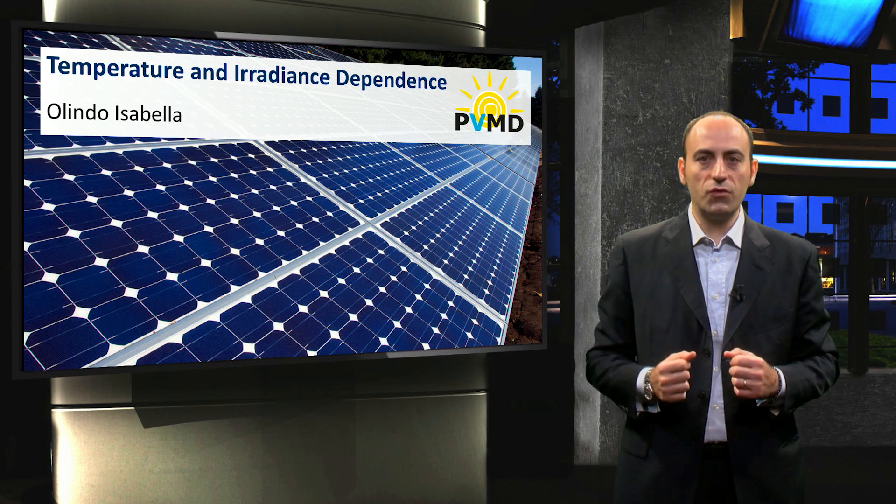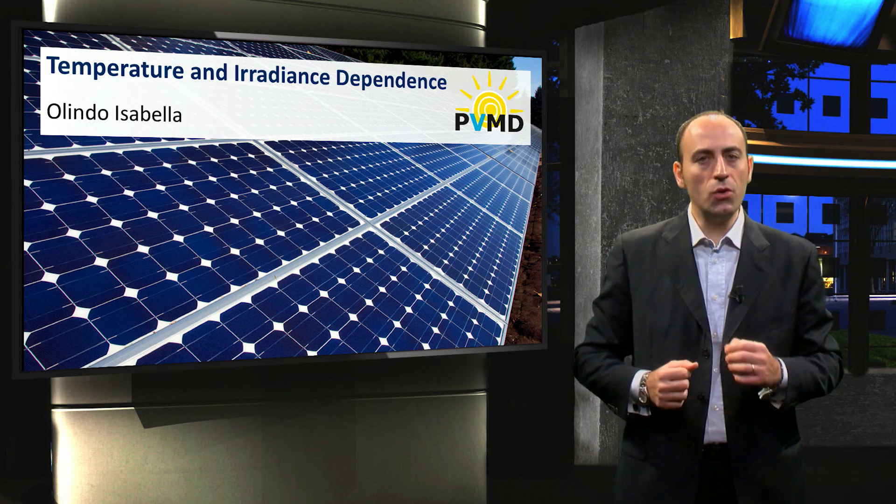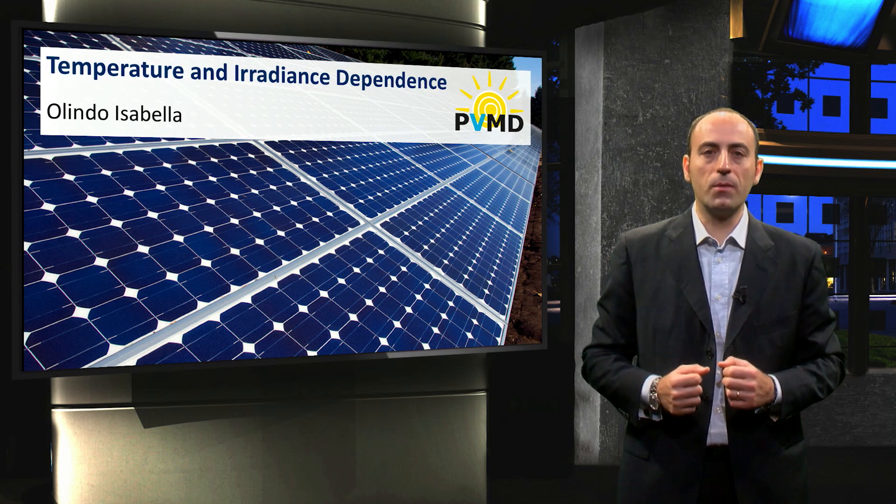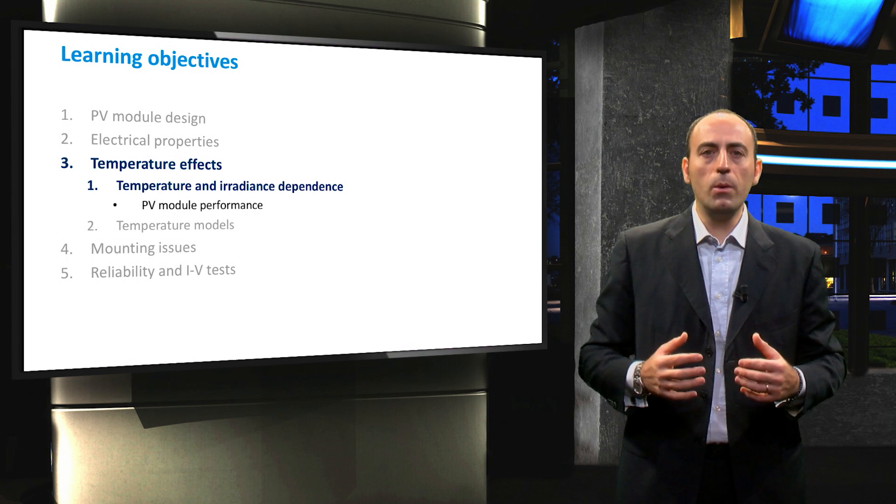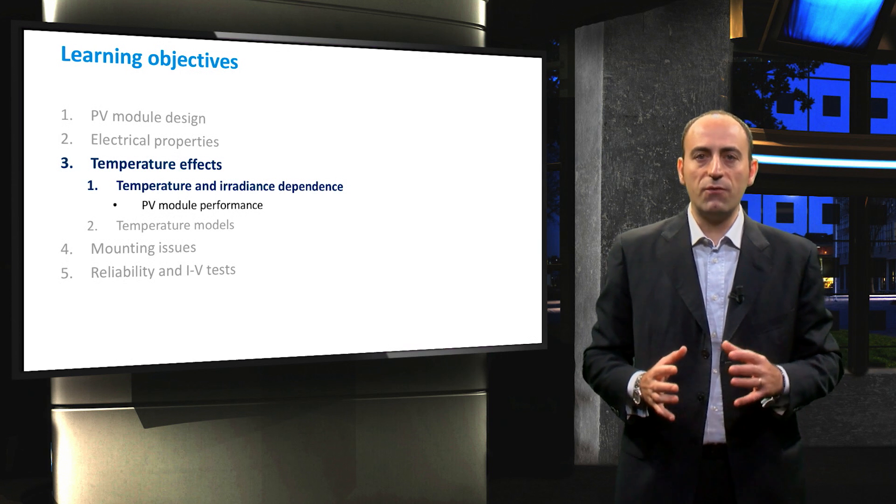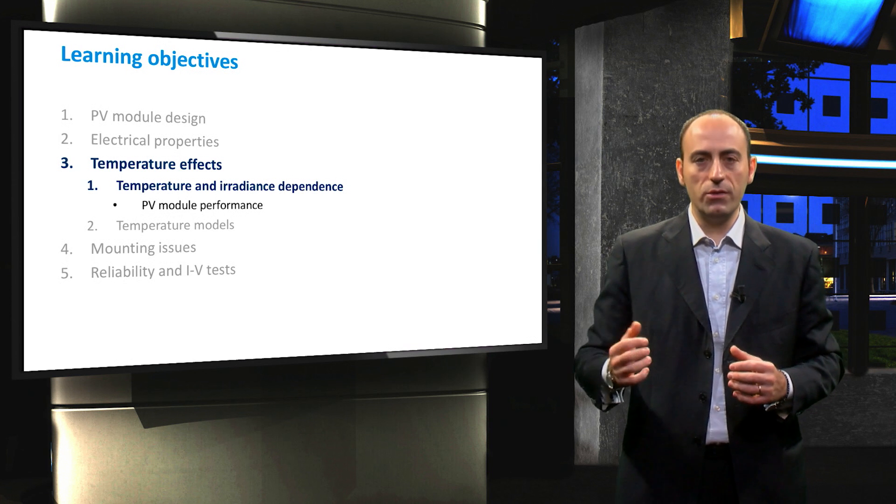Standard test conditions for a photovoltaic module are generally not representative of the real working conditions of a solar module. Therefore, in this video we will derive the electrical parameters of a photovoltaic module as a function of the temperature and of the irradiance.